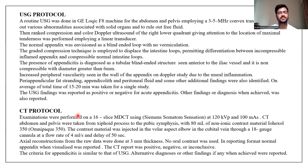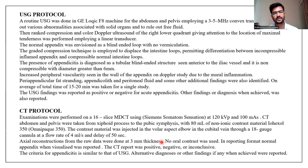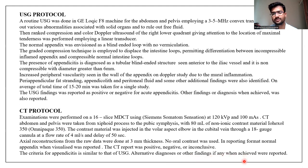For CT, a 16-slice MDCT Siemens Somatom Sensation was used. CT of abdomen and pelvis was taken from the xiphoid process to the pubic symphysis. A non-ionic contrast material, Axial 350, that is Omnipaque 350, was used for the contrast study. Axial reconstructions with 3 mm thickness slices were used. CT reports were classified as positive, negative, or inconclusive. The criteria for appendicitis on CT are similar to those of USG, and any alternative diagnoses or other findings were reported.